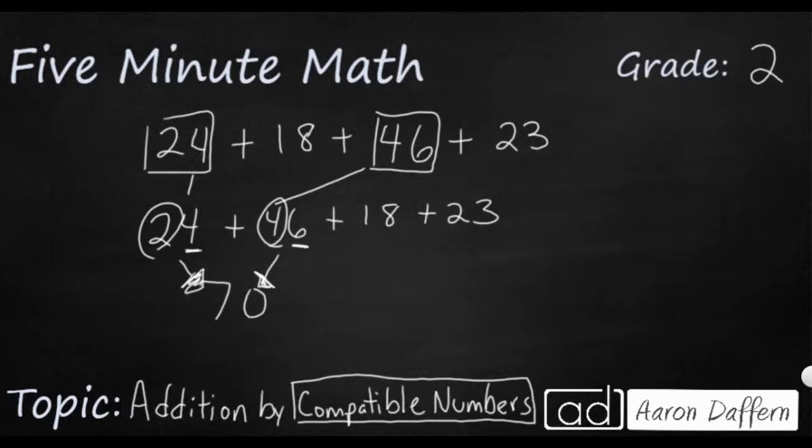Now my 18 and my 23, they almost make a ten. See this 8 and 3, that makes 11. So that's really close. What we're going to do is for just a moment, compensation is a term that we could use here. Compensation means I'm going to just take one away to tweak this number just a little bit.